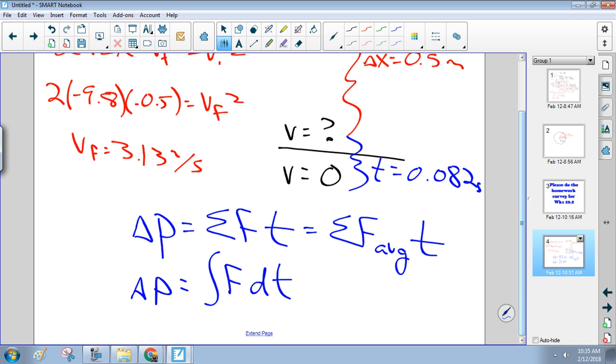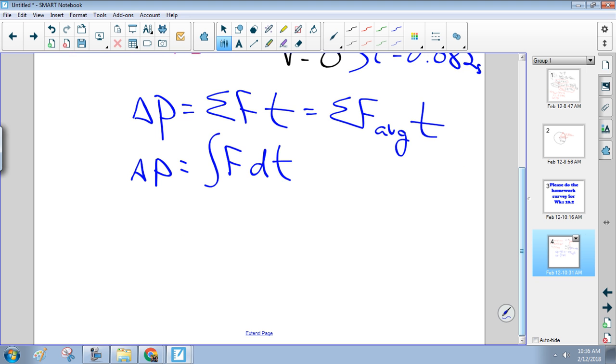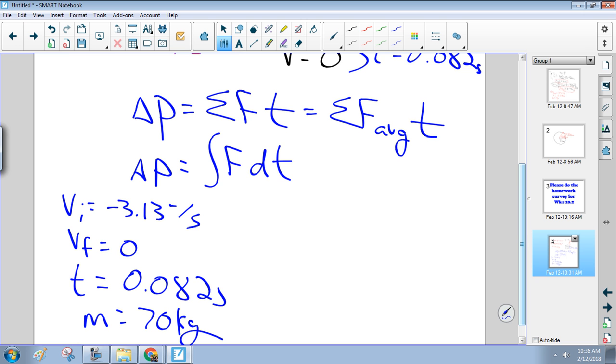All right. So during the collision, here's what we know. We know that our initial velocity is negative 3.13 meters a second. We know our final velocity is zero. We know that the time that this change takes place over is 0.082 seconds. And we know that our mass is 70 kilograms. So you could absolutely solve this just by finding acceleration, multiplying by mass to get net force and solving it that way. But let's do it this way.